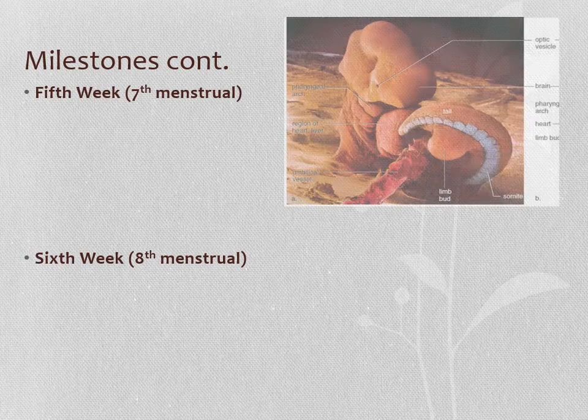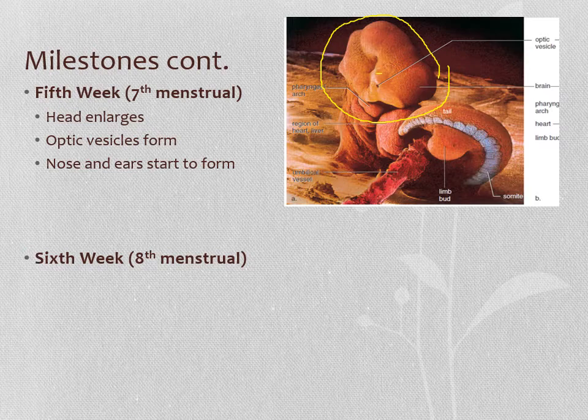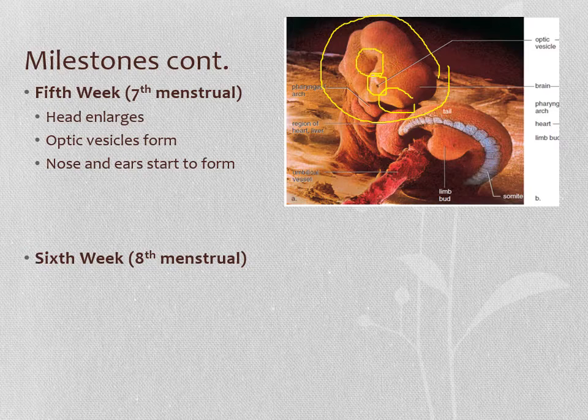In the fifth week, the head gets really large. You start to form the optic vesicle, which is here — that's a pit which is eventually going to form into an eyeball. It's not anything like an eyeball yet, but it's the beginnings of one, which is pretty exciting. The nose is starting to form and the ears are starting to form. Notice we still have quite a big tail at this stage in development, and the heart is still outside the body as well.